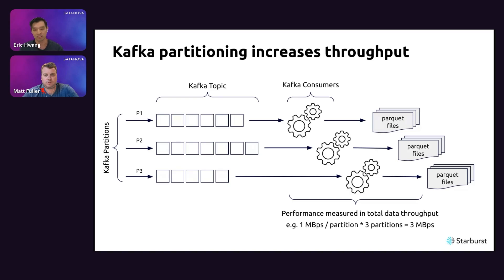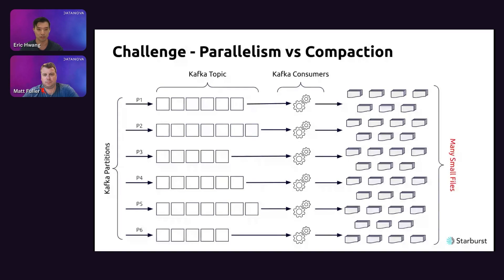A Kafka topic is a logical data stream composed internally of one or more Kafka partitions — these internal queues are a form of parallelism. As you add more partitions, you get more throughput from the producers and consumers. That's the natural way to scale the system. As an example, if we have three partitions and each can deliver one megabyte per second, the total Kafka topic throughput is three megabytes per second.